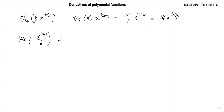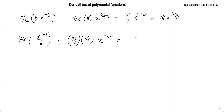Now let us find the derivative of this. This is 3 by 5 multiplied by 1 by 6·x to the power of 3 by 5 minus 1, which is minus 2 by 5. This results in 1 by 10·x to the power of minus 2 by 5.